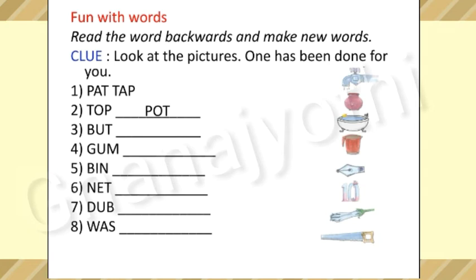Next, third one: B-U-T, 'but' — read the word backwards: T-U-B, 'tub.' Next, fourth one: G-U-M, 'gum' — read the word backwards and you get a new word: M-U-G, 'mug.'